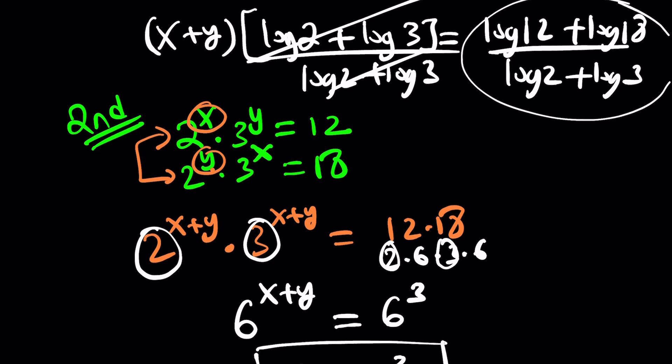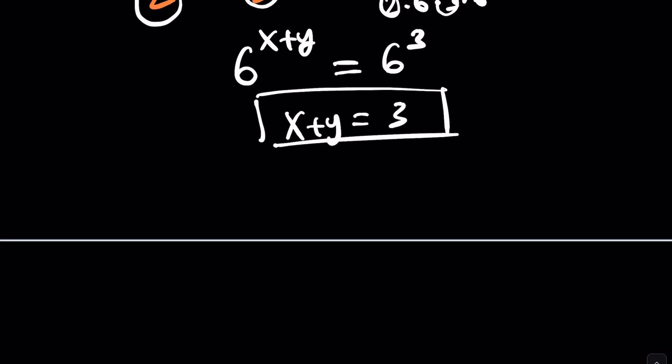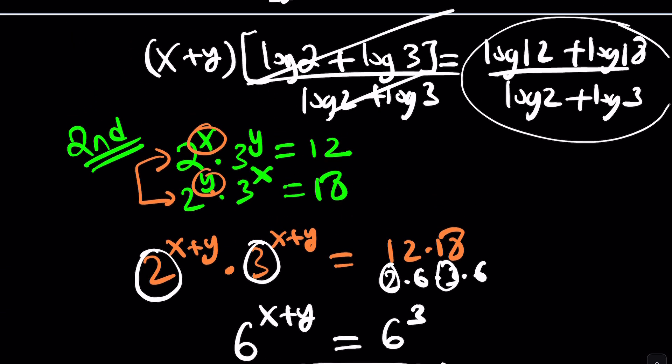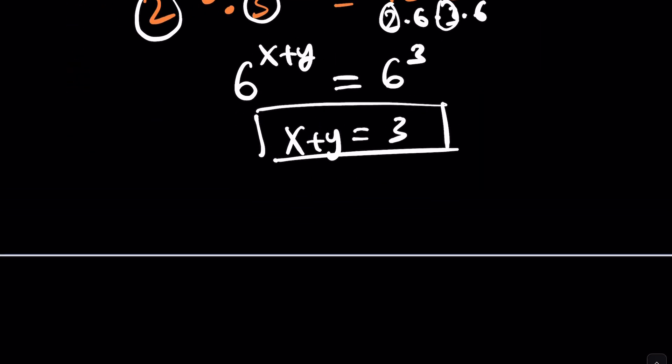By the way, the way it's 3 is this is log 6. And this is log 12 times 18. If you think about it, that's supposed to be 216, which is 6 to the 3rd power. Anyways, that's a different story. You can go ahead and do that yourself. That's x plus y. So I do need another equation, don't I?